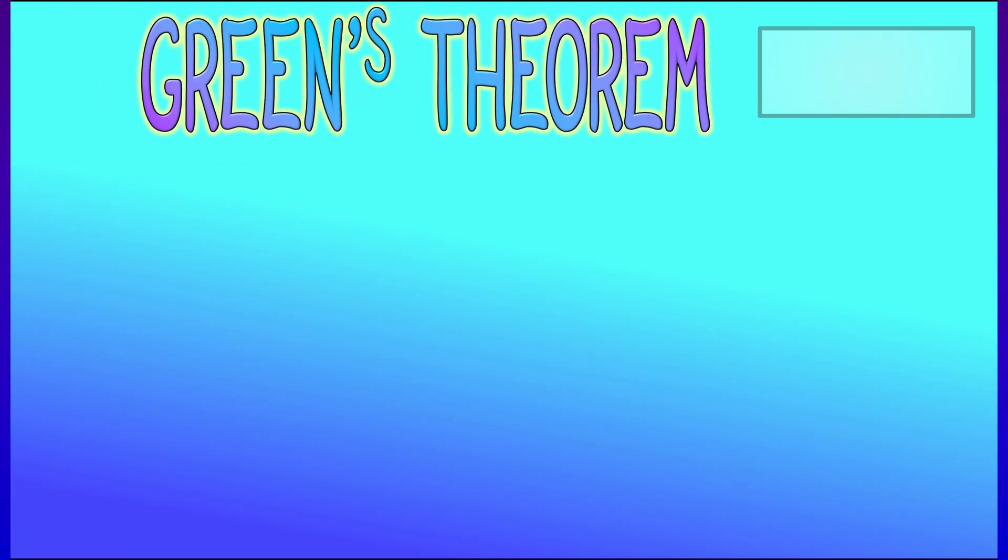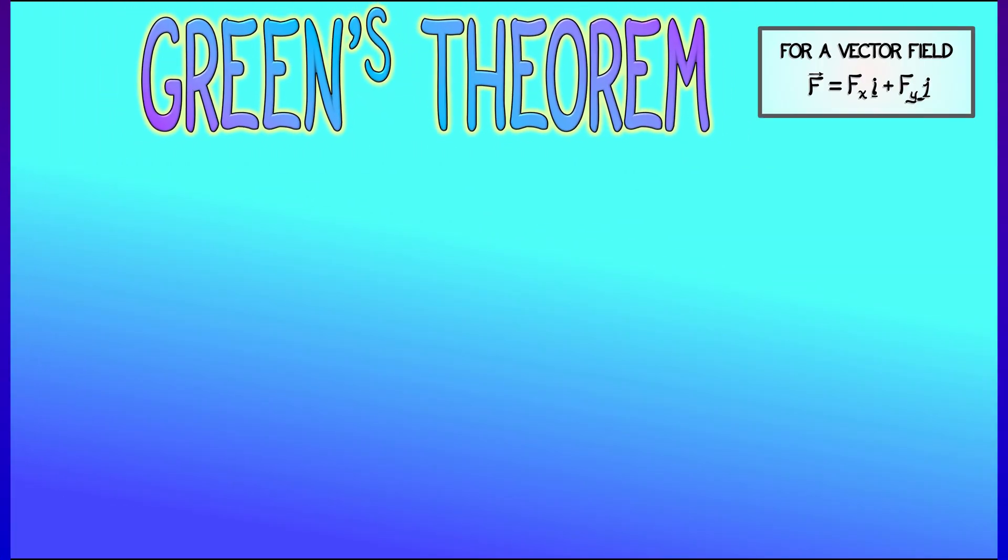Let's say we have a vector field, something in the form fx i plus fy j, where those i and j components of that vector field are labeled fx fy. What happens when we apply Green's Theorem to the one-forms associated to this?